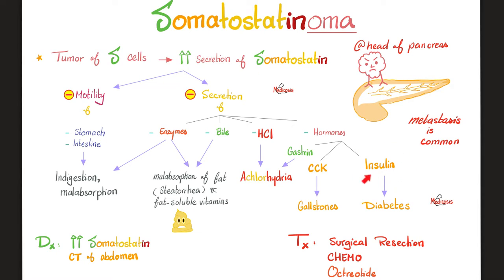Somatostatin also inhibits insulin release, so you get diabetes. Somatostatinoma can metastasize to other locations outside the head of the pancreas. How can I diagnose it? Elevate the levels of somatostatin in the blood, and of course you need history and physical exam. Can I see the tumor? Yes — CT scan of the abdomen, MRI of the abdomen, or good old ultrasound.